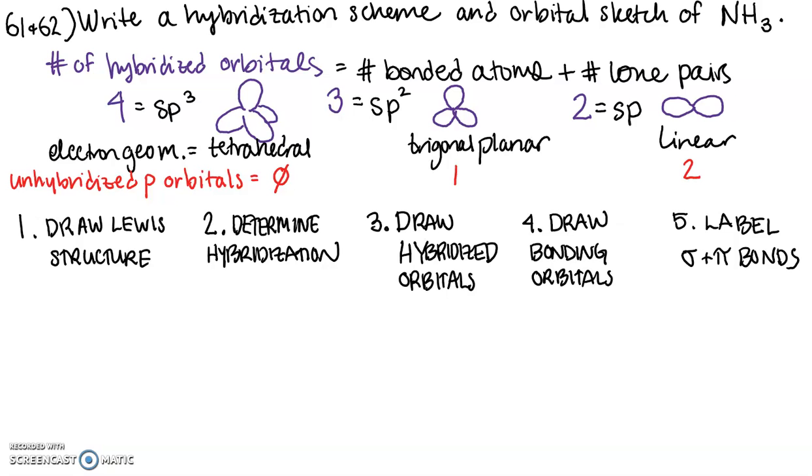Okay, so this is how we write a hybridization scheme and draw a sketch of a molecule with the hybridized orbitals. We'll first do this for ammonia. This is number 61 and 62 from the homework 14.